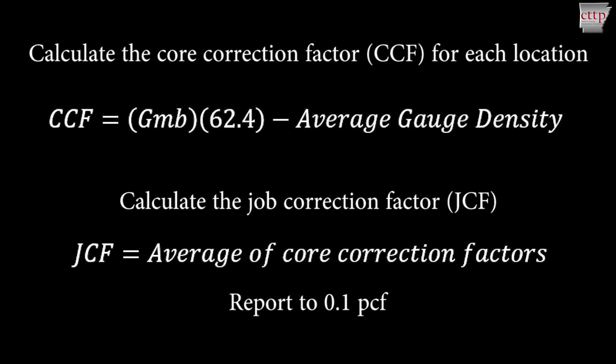Calculate the core correction factor, CCF, for each location by multiplying the core specific gravity by 62.4 pounds per cubic foot and then subtracting the average gauge density for the specific location. Calculate the job correction factor, JCF, by averaging the five core correction factors.